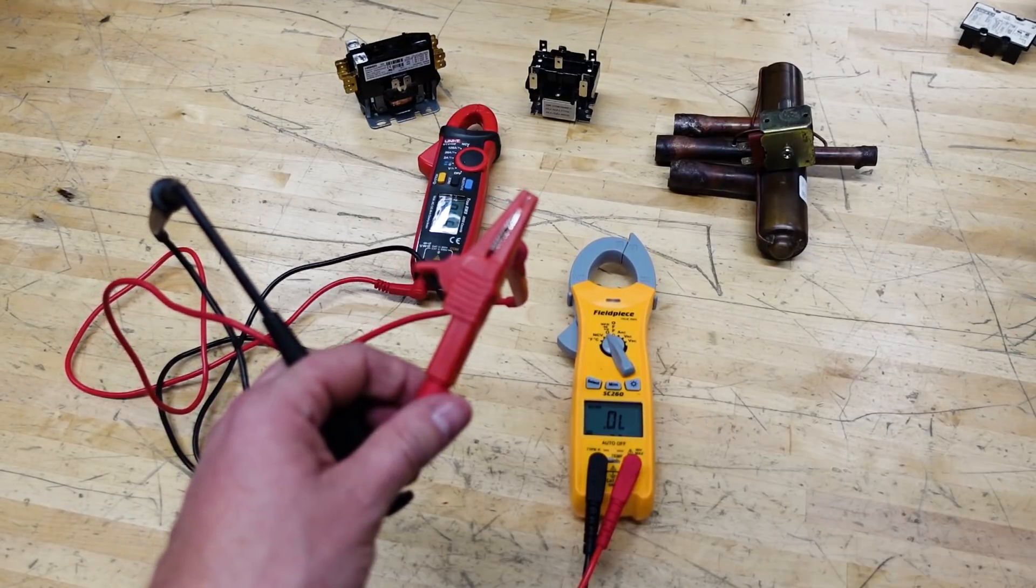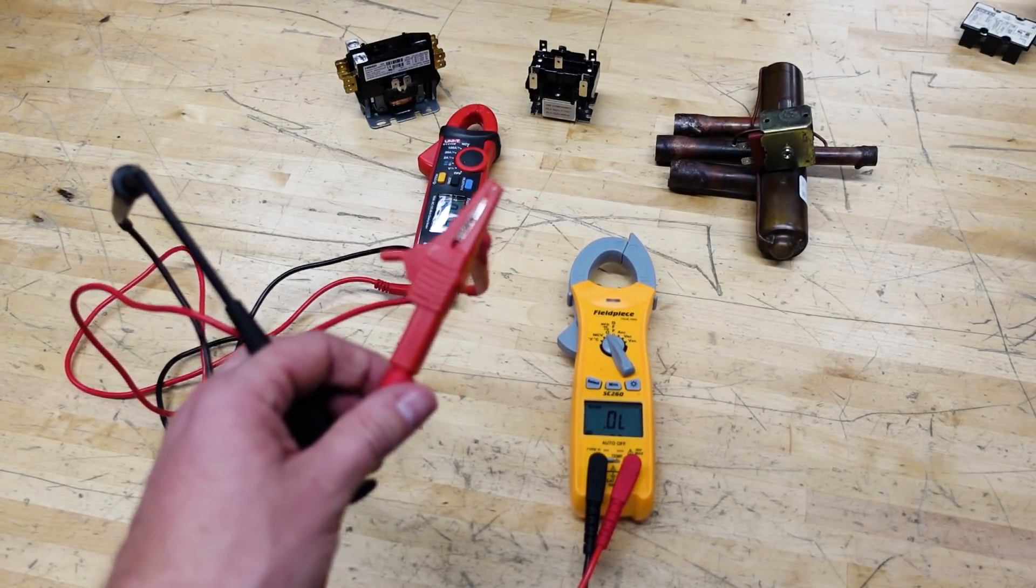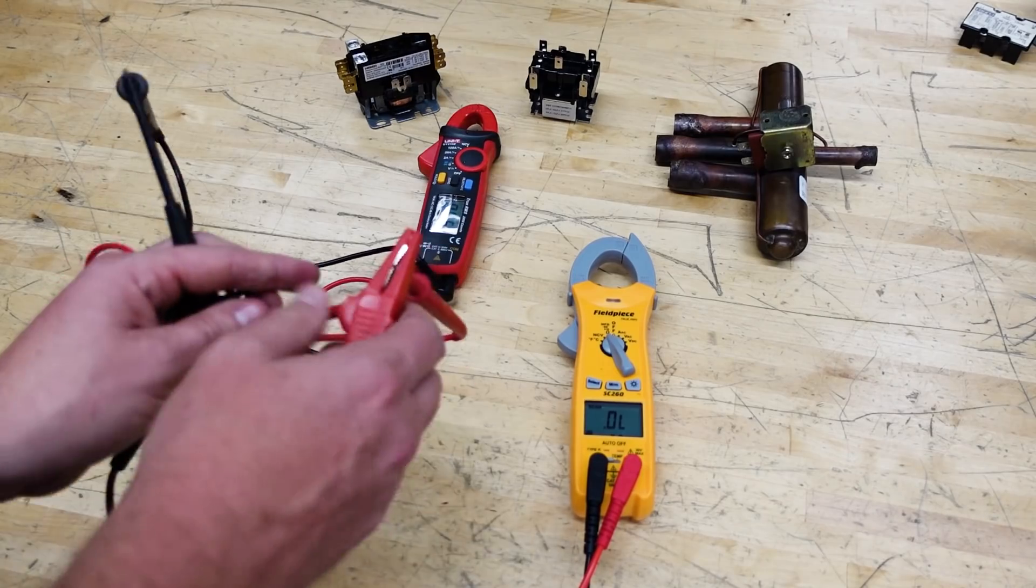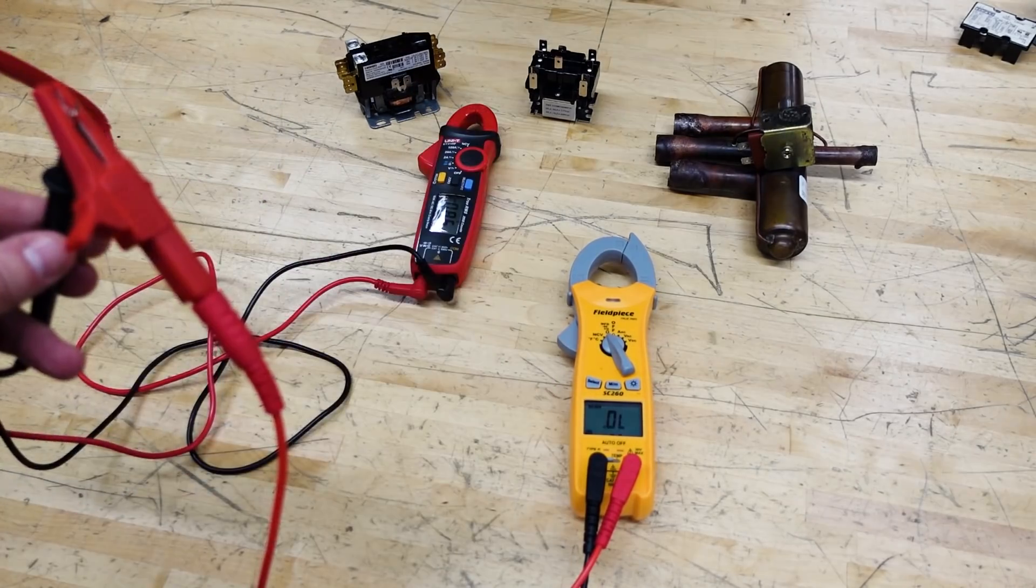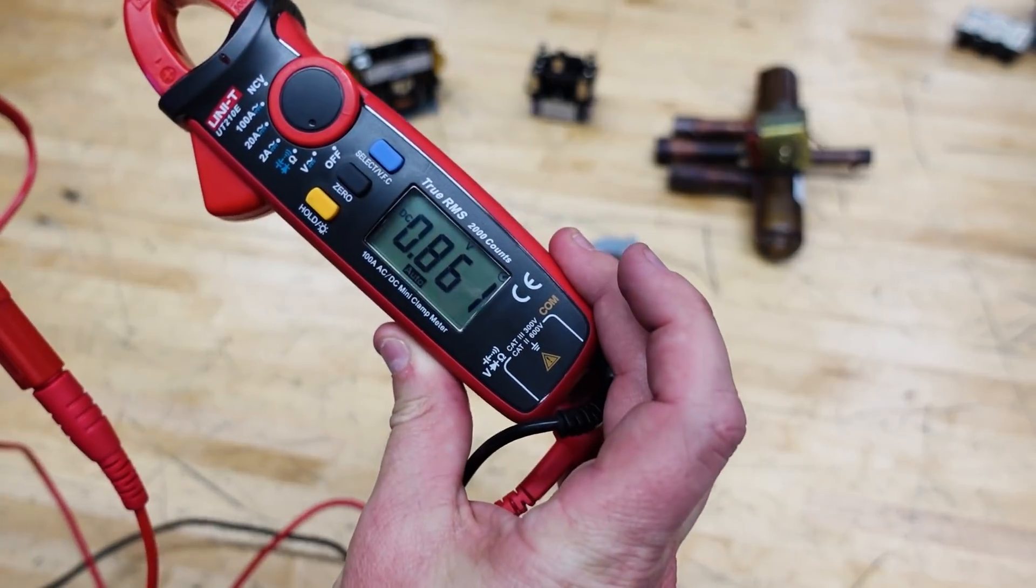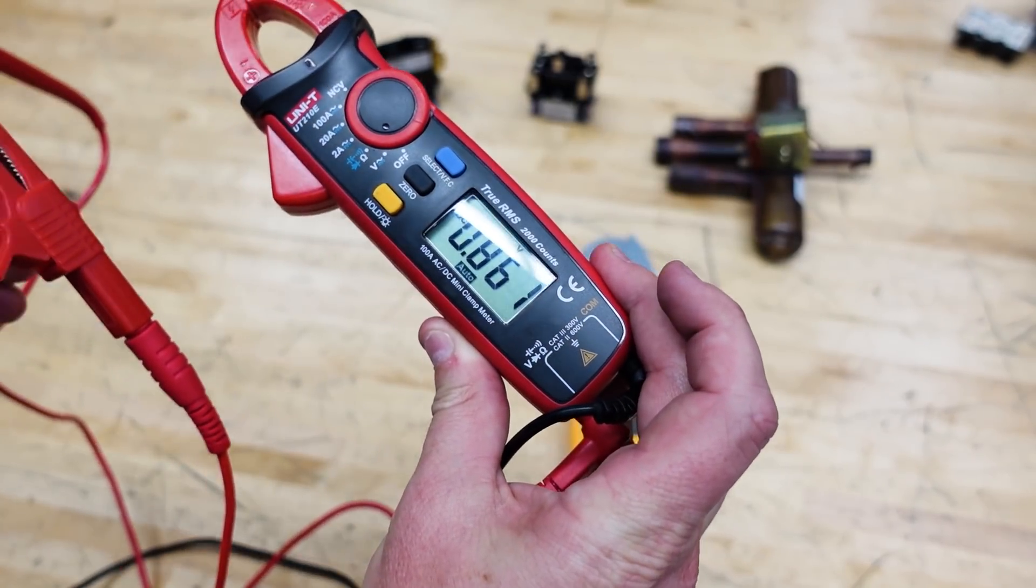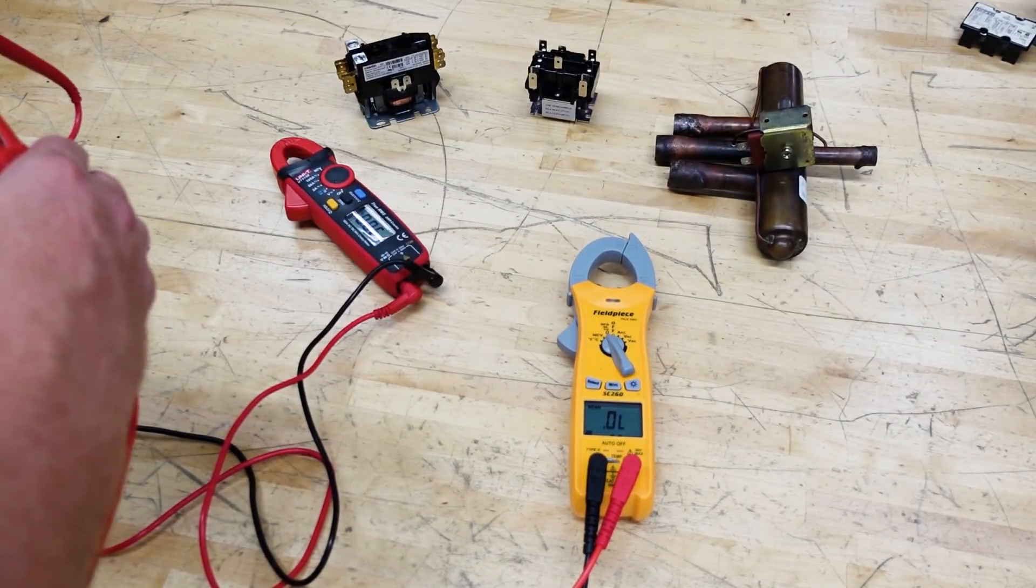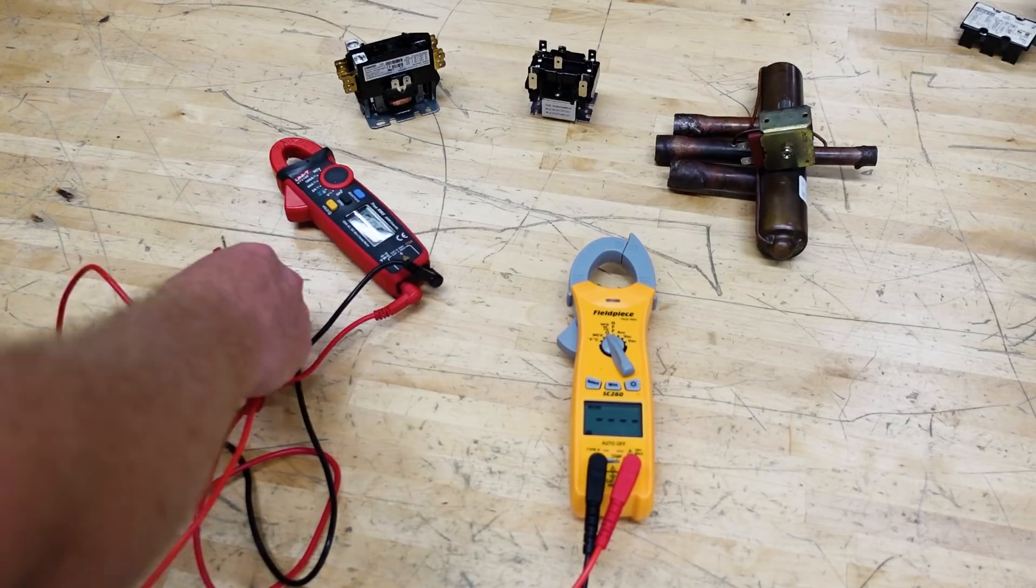All right. So what are we measuring here? Negative 0.8. Negative 0.8 volts. Now that's just because of the polarity. So if I switch it around, 0.8 volts. So that's all we're measuring, 0.8 volts. Not a lot of voltage in order to test that. Now let's flip it around and do it the other way and see how we do.